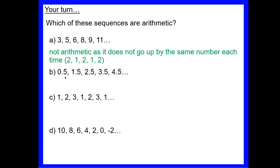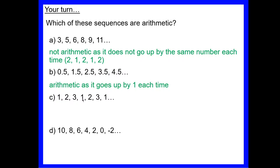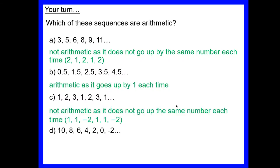Our next one: from 0.5 to 1.5 is up by 1, from 1.5 to 2.5 up by 1, from 2.5 to 3.5 up by 1, from 3.5 to 4.5 up by 1 — we're adding 1 each time, so yes it is arithmetic. The next sequence starts by going up, then goes down, then up again, so without even calculating it can't be arithmetic.